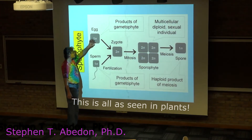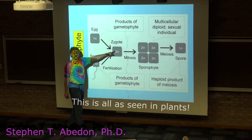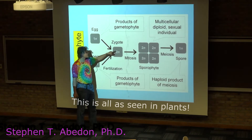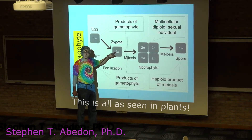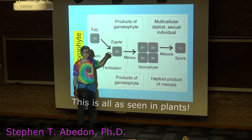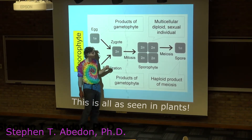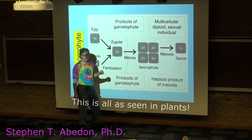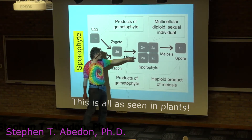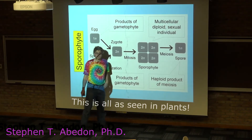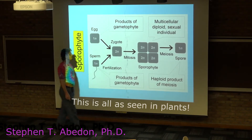So you have the sperm, it finds the egg, it produces a zygote, the zygote stays in association with the female parent. The zygote goes through mitosis and makes a sporophyte.